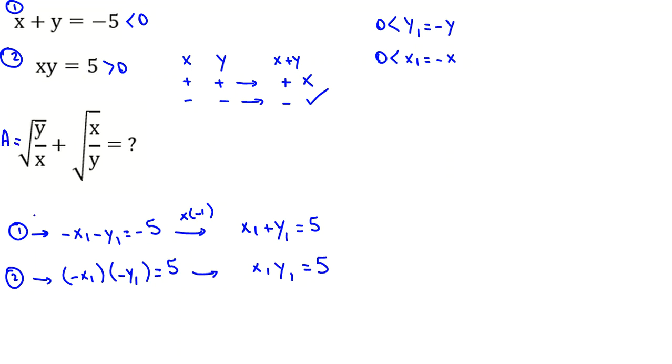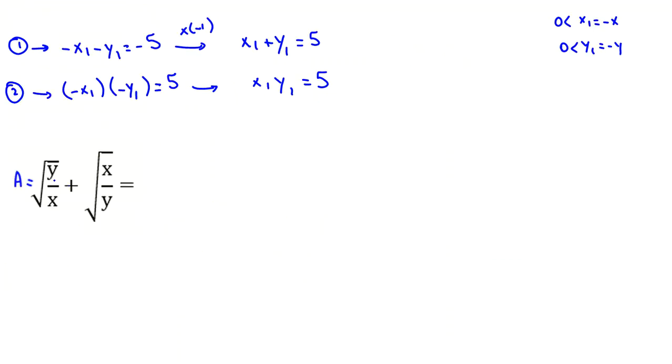Then A equal to, here we can say y because of this is negative y1. Because both y and x are negative, it will be okay. Negative negative, I replace negative y1 here, negative x1, plus negative x1, negative y1. So negative negative will be cancelled and it will be y1.